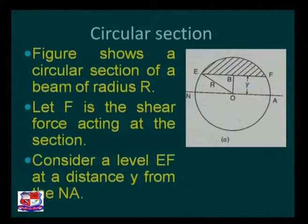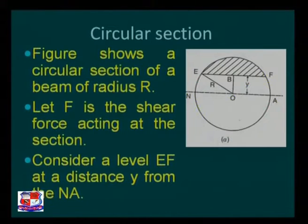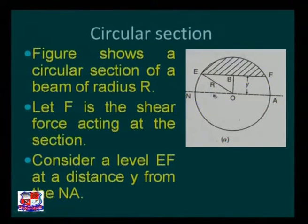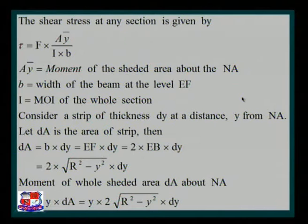The figure shows a circular section of a beam of radius r. Let F be the shear force acting at that particular section, and consider a level EF at a distance y from the neutral axis. The neutral axis passes through the centroid of the section. Here r is the radius, and y is the distance of layer EF from the neutral axis. The shear stress at any section is given by τ = FAȳ / Ib.